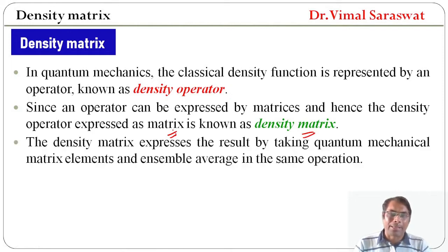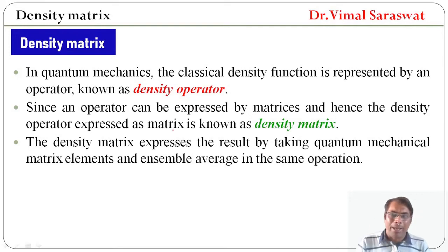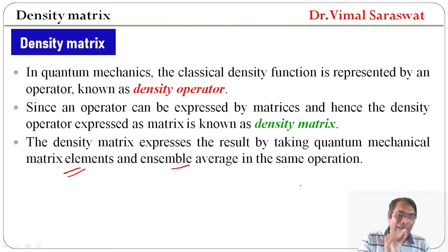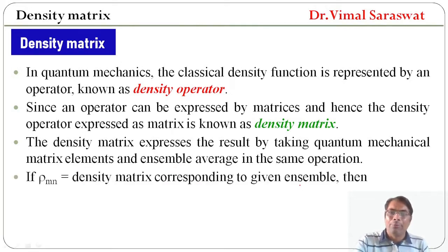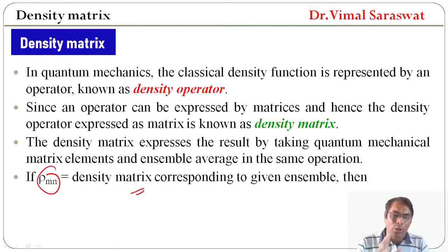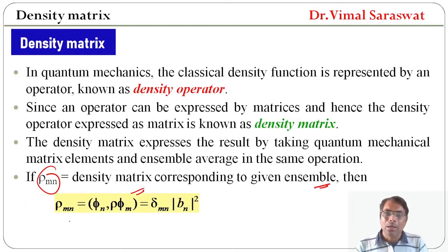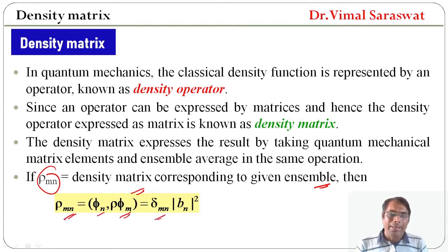The density matrix expresses the result by taking quantum mechanical matrix elements and ensemble average in the same operation. If rho_mn is the density matrix corresponding to the given ensemble, then rho_mn equal to <phi_n | rho | phi_m>, and this is equal to delta_mn times |b_n|^2.